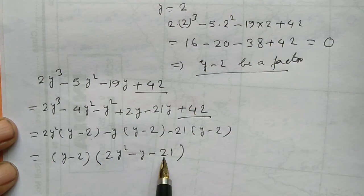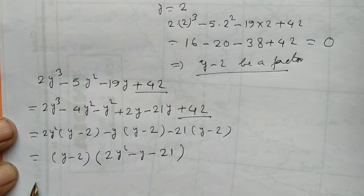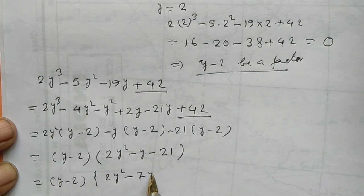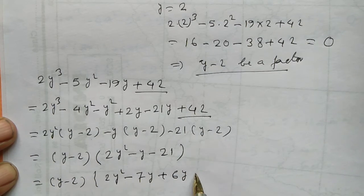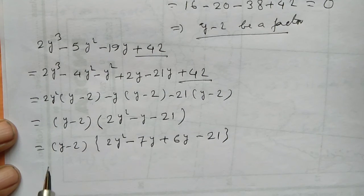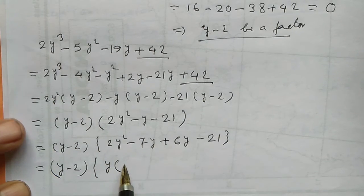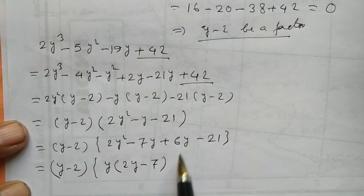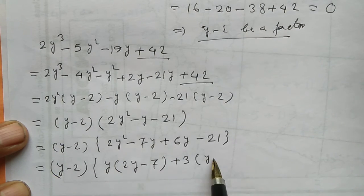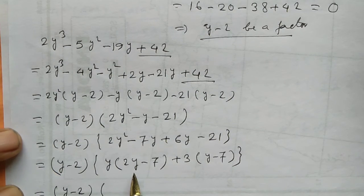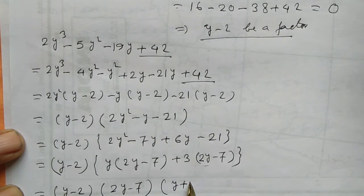Now we factorize 2y squared minus y minus 21. We note that 2 times 21 equals 42, and 6 times 7 equals 42. So we split the middle term: 2y squared minus 7y plus 6y minus 21. Taking y common from the first pair gives y(2y minus 7), and 3 common from the second pair gives 3(2y minus 7). So we get (2y minus 7)(y plus 3).